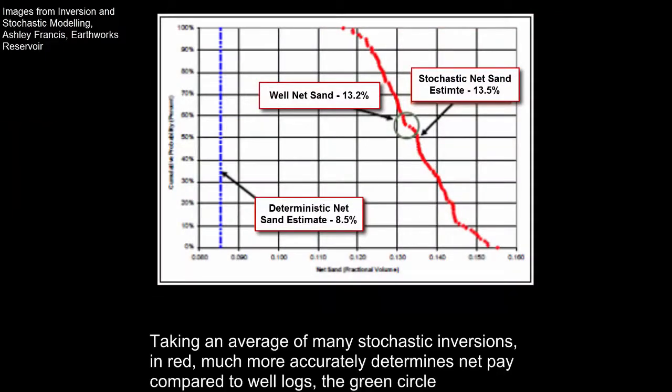Taking an average of many stochastic inversions in red, much more accurately determines net pay compared to well logs, the green circle.